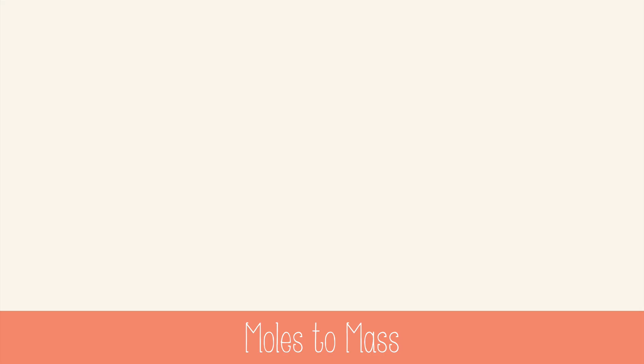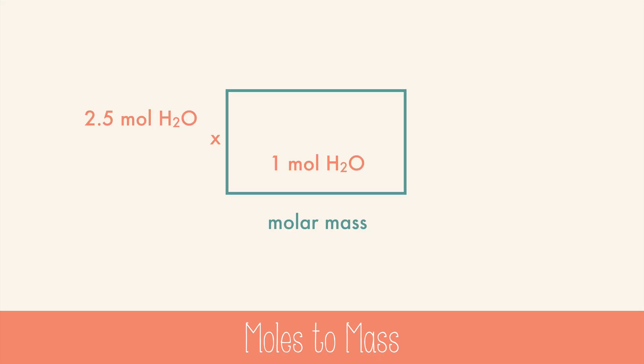Let's try it with water. If you have 2.5 moles of water, to convert to grams, we need to use the molar mass. One mole on the bottom and 18 grams on top. Why 18? Because that's the mass of 2 moles of hydrogen plus the mass of 1 mole of oxygen — 18 grams per mole. Then you calculate it and you get 45 grams of water.